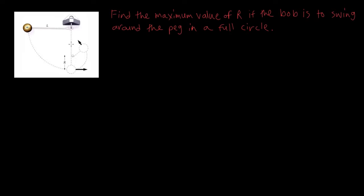Let's analyze the forces acting on the pendulum bob when it's at its highest point after it gets caught on the thin peg. After the bob gets caught, it's going to swing around in a circle and come to the top. At its highest position, there's going to be a weight force pointing downward, and because it's connected to a string, there's going to be a tension force which also points downward.